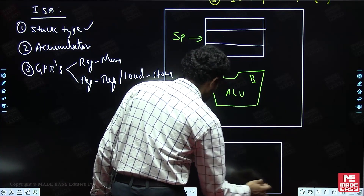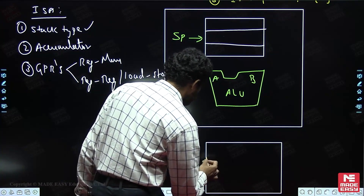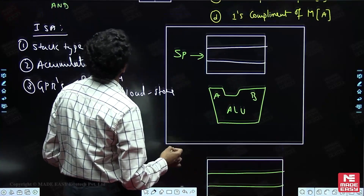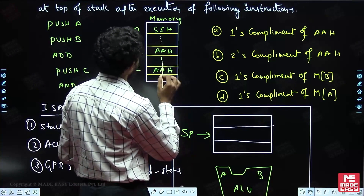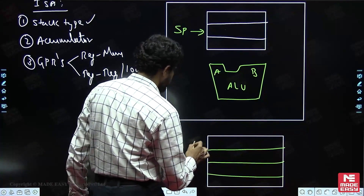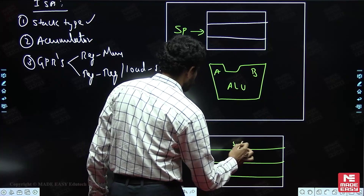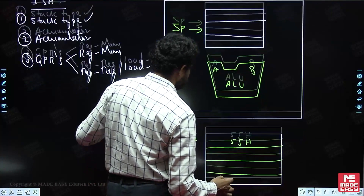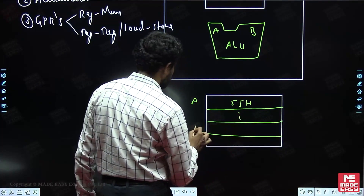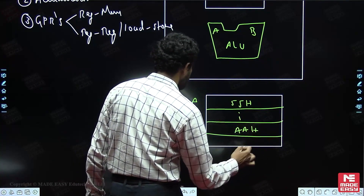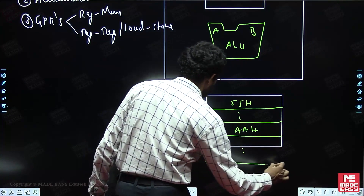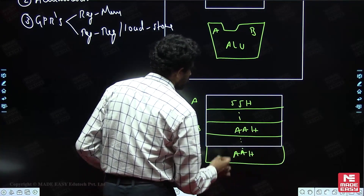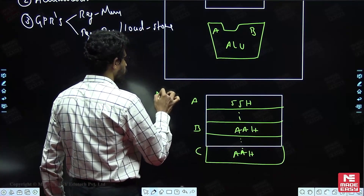In the external memory, the addresses are A, B, and C. A contains 55H, B contains AAH, and C also contains AAH. This is the external memory. From here, this data must be brought into the processor. Assume something like cache memory is used as the internal stack.